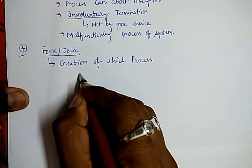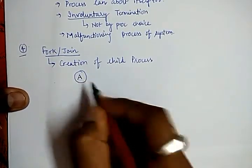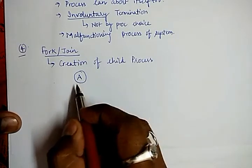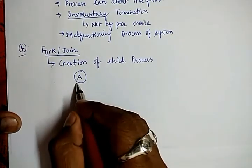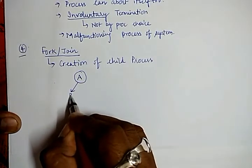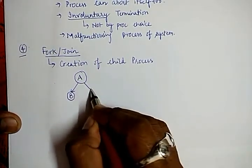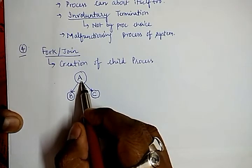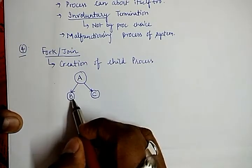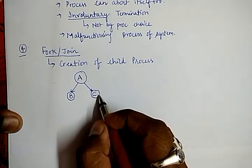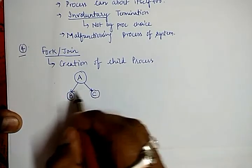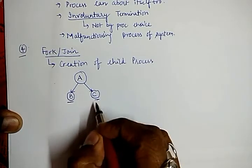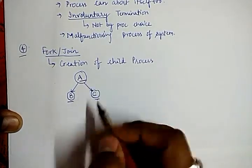Consider a scenario where a process is executing and suppose this process is having a very lengthy code and it wants to divide its data into parts. For this it divides itself into three parts: one part is being maintained by itself (A), second part is shared with B, and third part is assigned to C. B will execute its task, C will complete its task, and A will continue its own code.